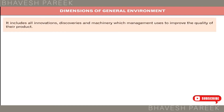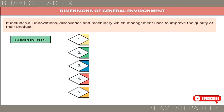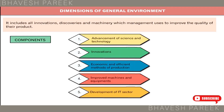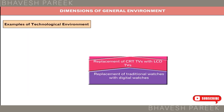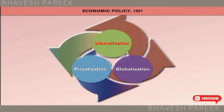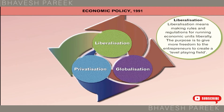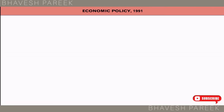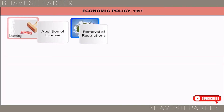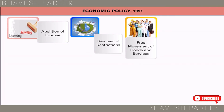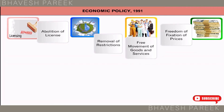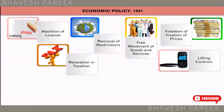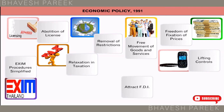Technological Environment includes all innovations, discoveries, and machineries which management uses to improve the quality of their product. Examples of technological environment include free movement of goods and services, freedom of fixation of prices, relaxation in taxation, lifting controls, Exim procedures simplified, and attract FDI.